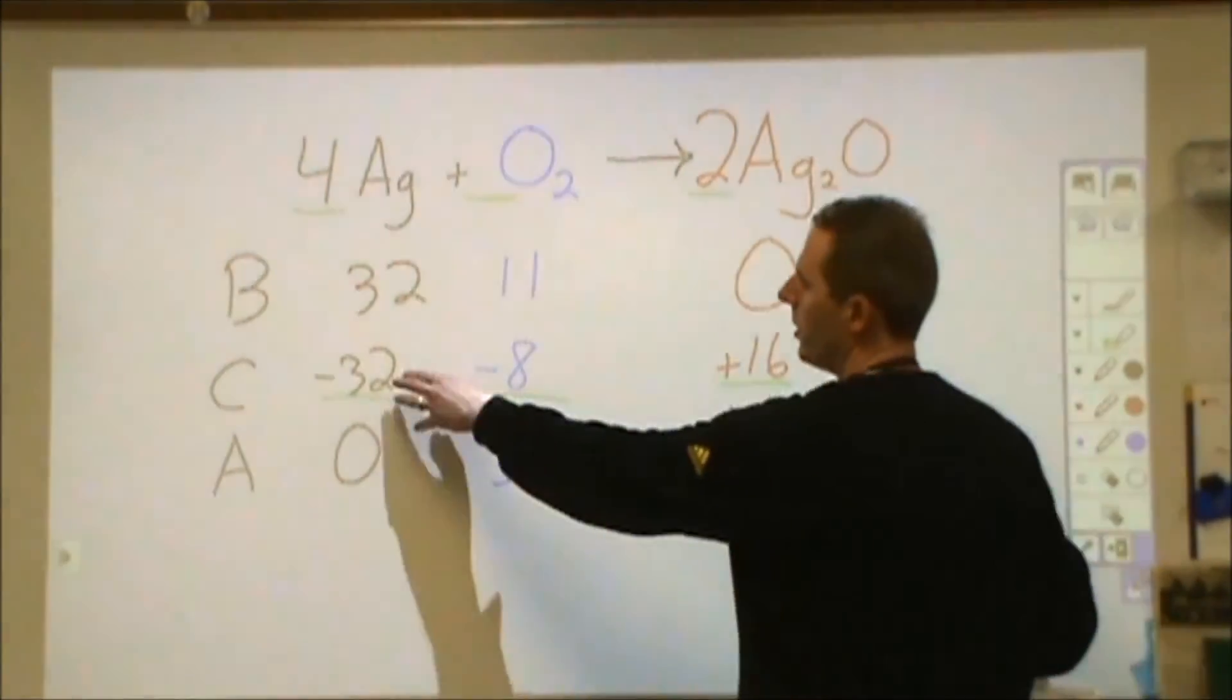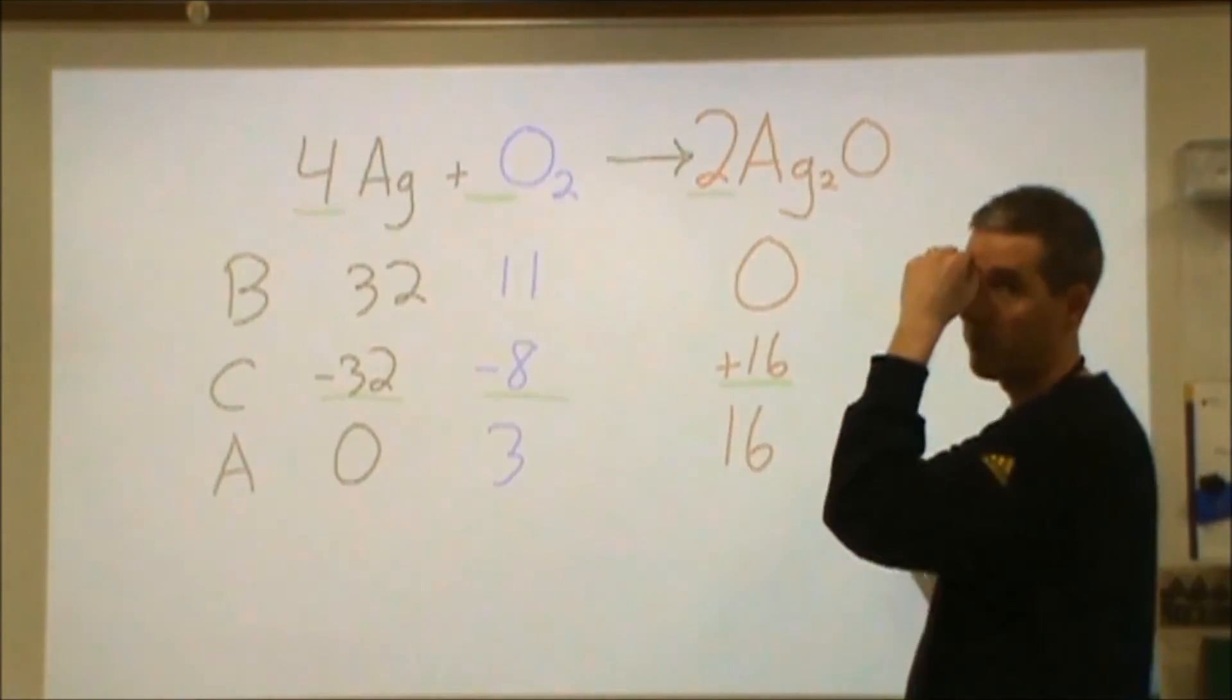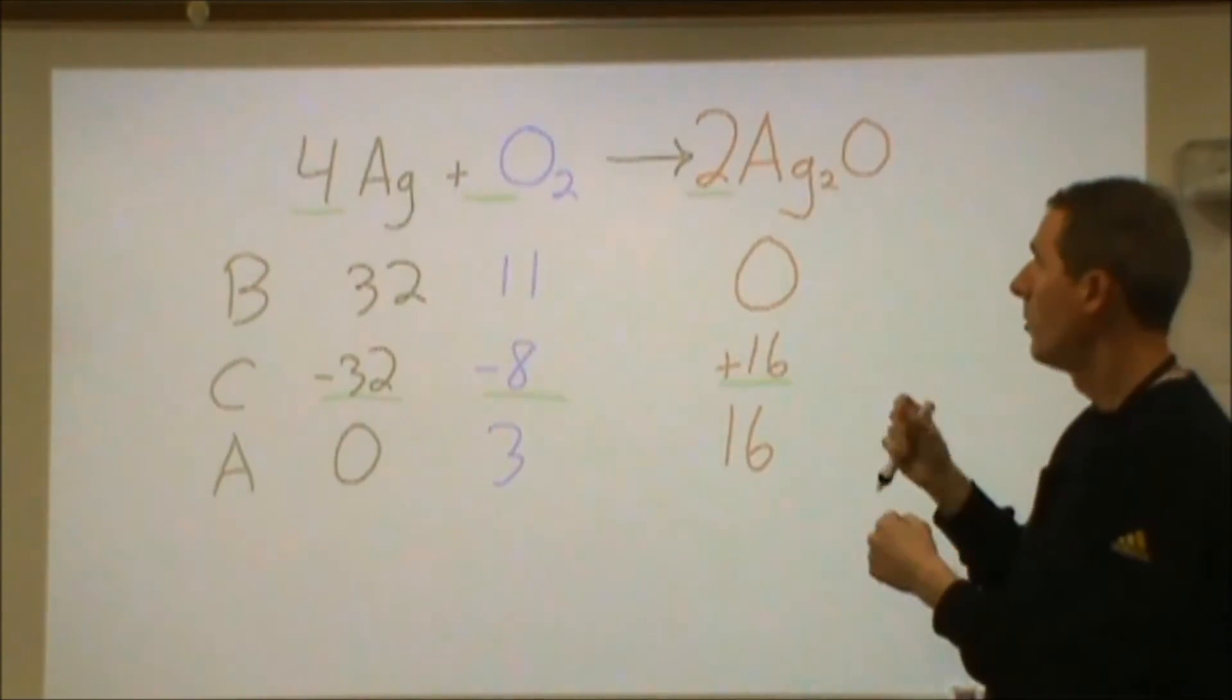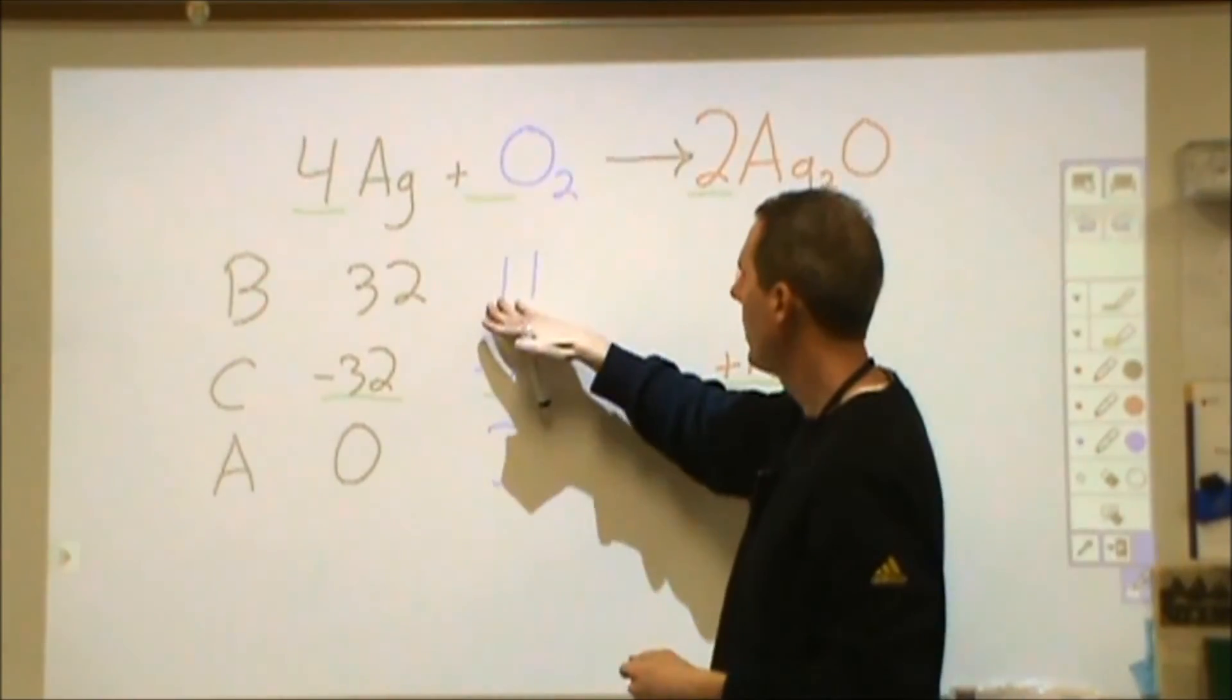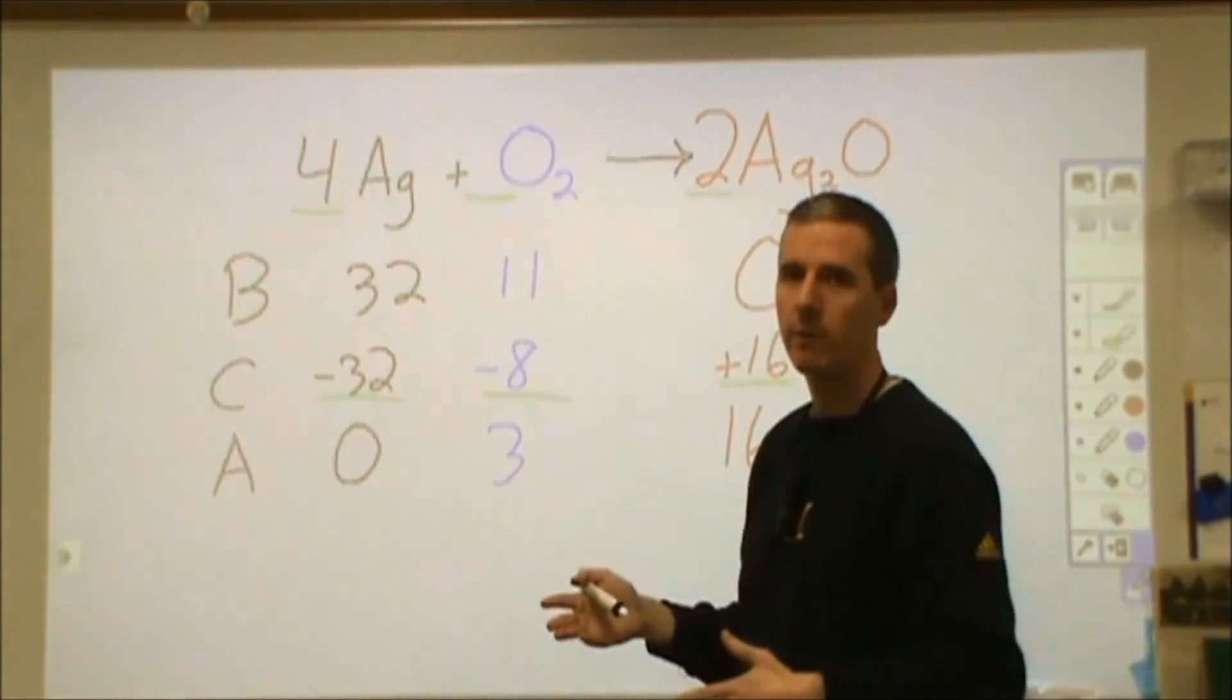So in this case, thirty-two moles of this reacted with eight moles of this to produce sixteen moles of this, and that's where my ratios come in. And I could start it with any amounts. I could change this to a twelve or a fifteen, and it would actually change nothing about the reaction except for how much I have left over.